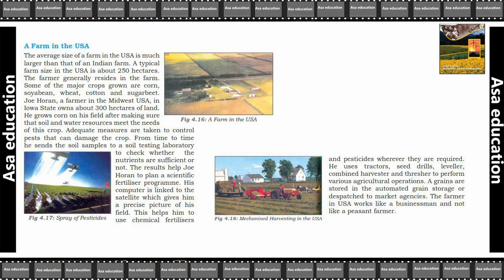From time to time, Joe Horan sends soil samples to a soil testing laboratory to check whether the nutrients are sufficient. The results help him plan a scientific fertilizer program. His computer is linked to a satellite, which gives him a precise picture of his field, helping him to use chemical fertilizers and pesticides only where they are required.